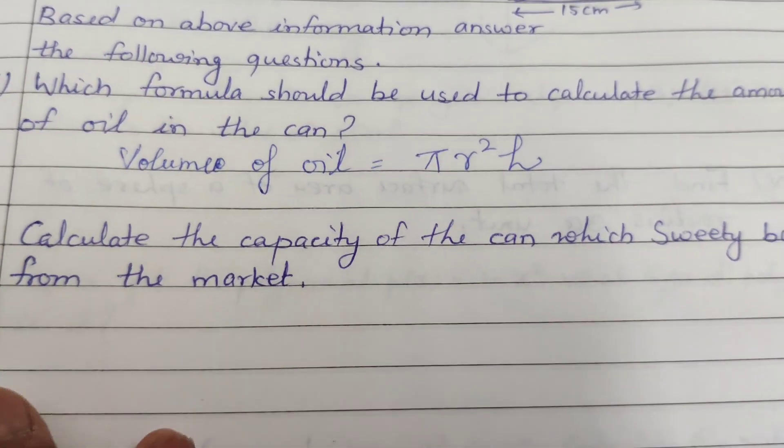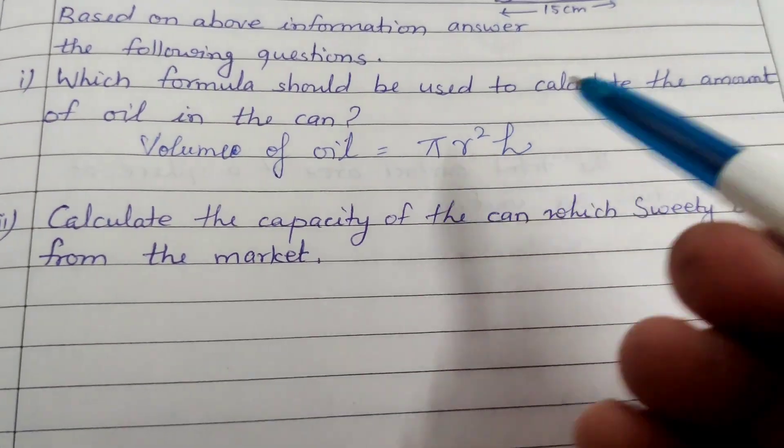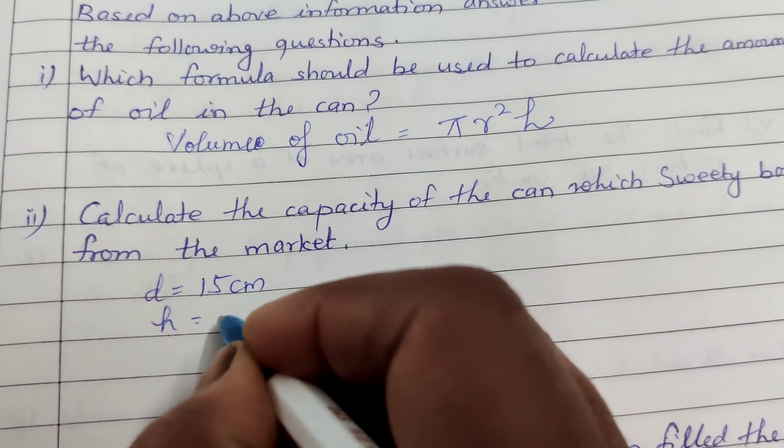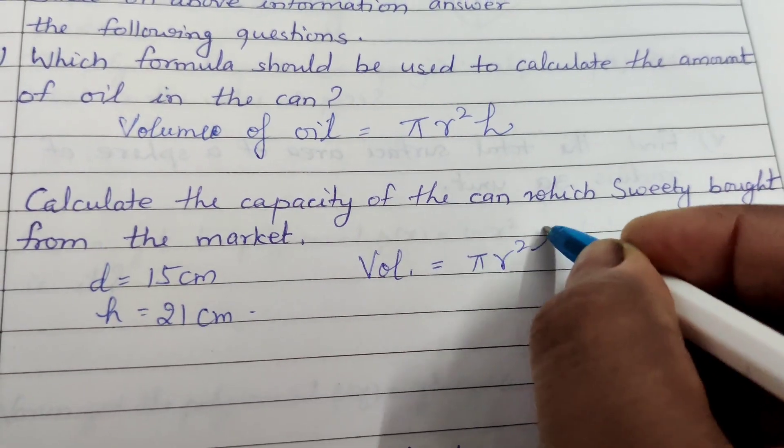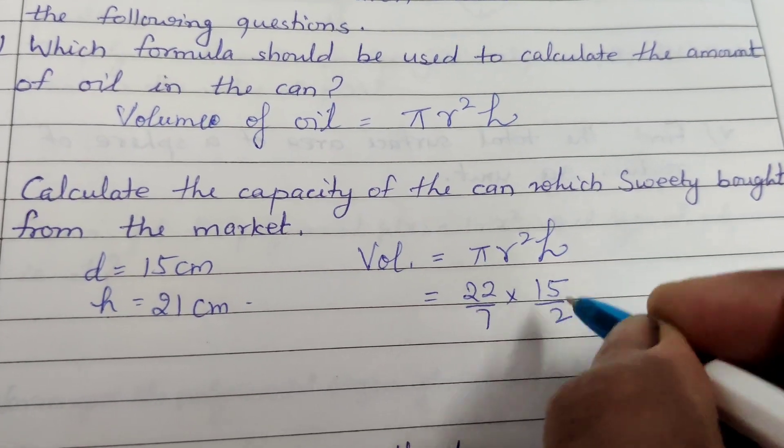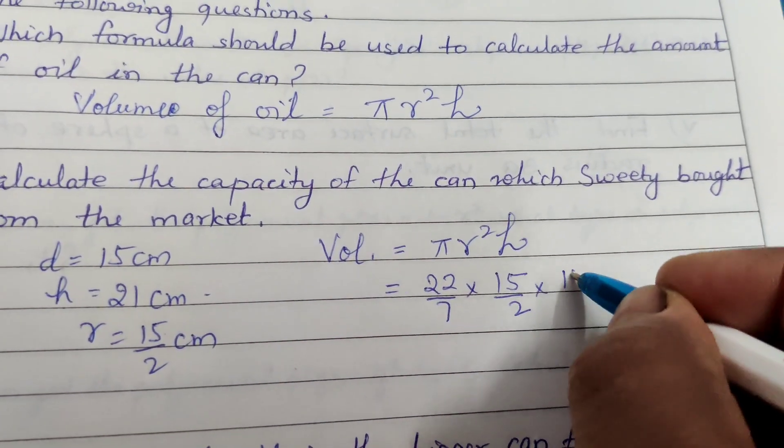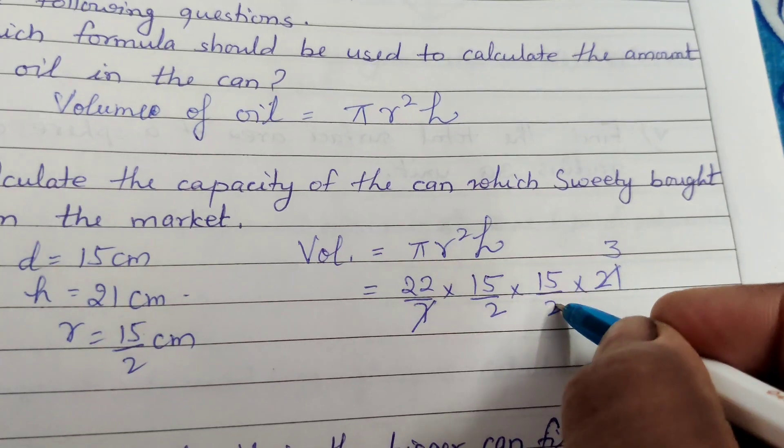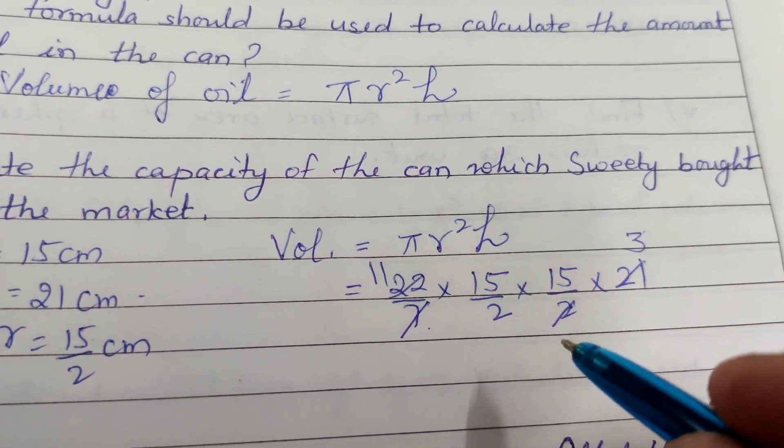Next question, calculate the capacity of the can which Sweetie bought from the market. Here this is the can, here is the diameter given that 15 centimeter and height is 21 centimeter. Now the capacity means volume. Volume equal to pi r square h. Now put the values, pi is 22 by 7, r is 15 by 2. Diameter 15 then the radius is 15 by 2 centimeter and the height is 21 centimeter. Now simplify, cancel by 2, 7 into 3, 21. Now multiply and divided by 3, so we get